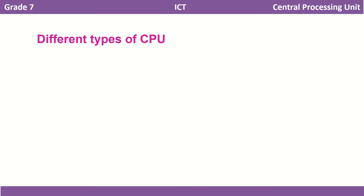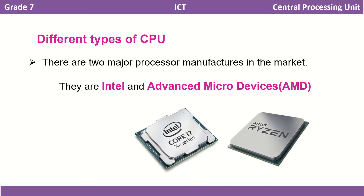There are many different processors available in the market. But there are two major leading manufacturers of processors, known for their speed and quality. They are called Intel and Advanced Micro Devices, also known as AMD.